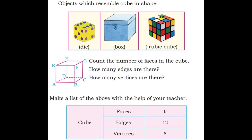Both have the same properties: faces — six, edges — twelve, and vertices — eight. Cuboid and cube have the same properties.